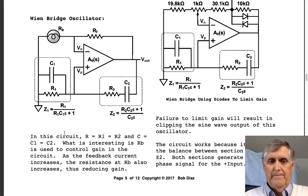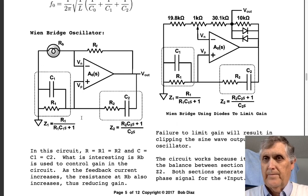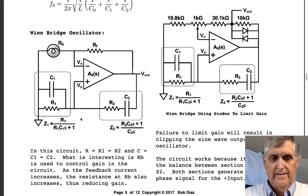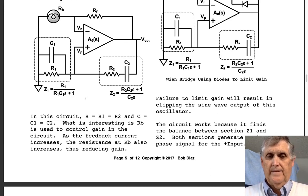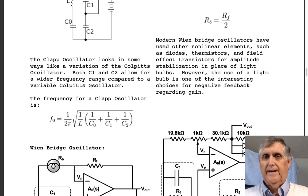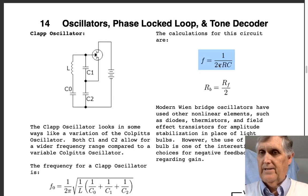Basically, these are the equations. I wouldn't worry too much about them. Usually R1 equals R2, C equals C1 equals C2, and so on. RB is the one that controls the gain. So you want to know what the calculations for the circuit are—there you have it. You won't be asked on this.